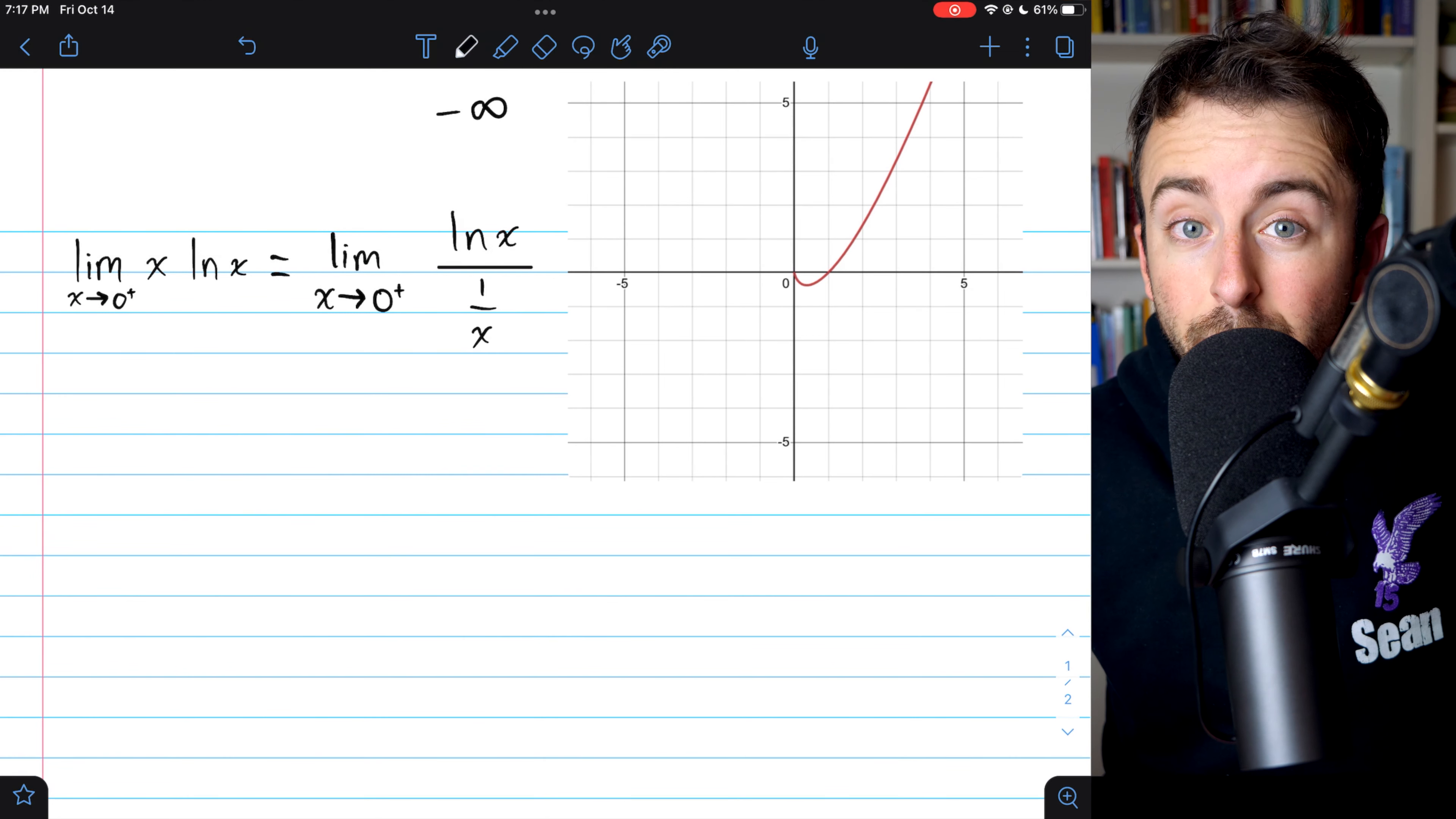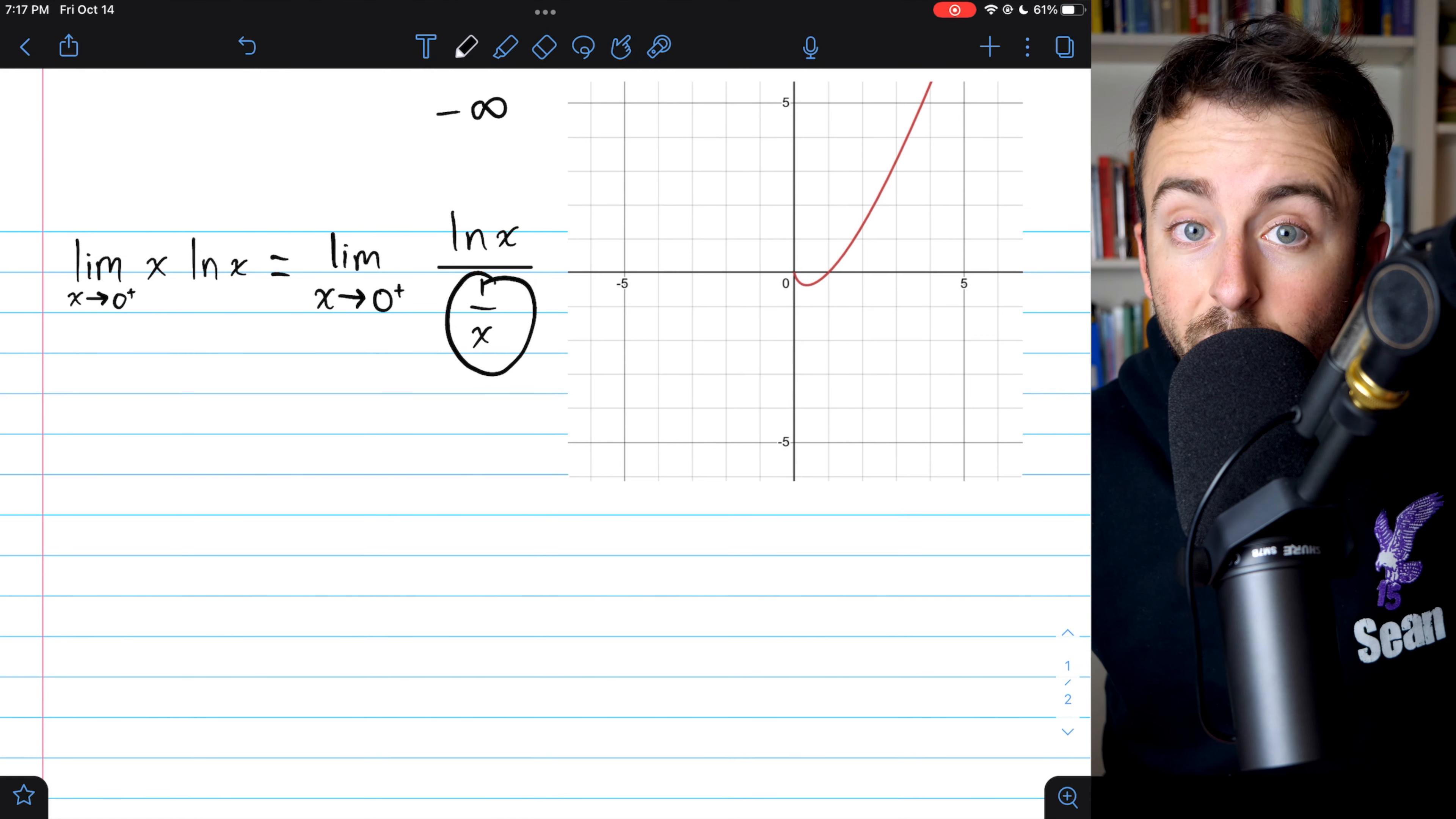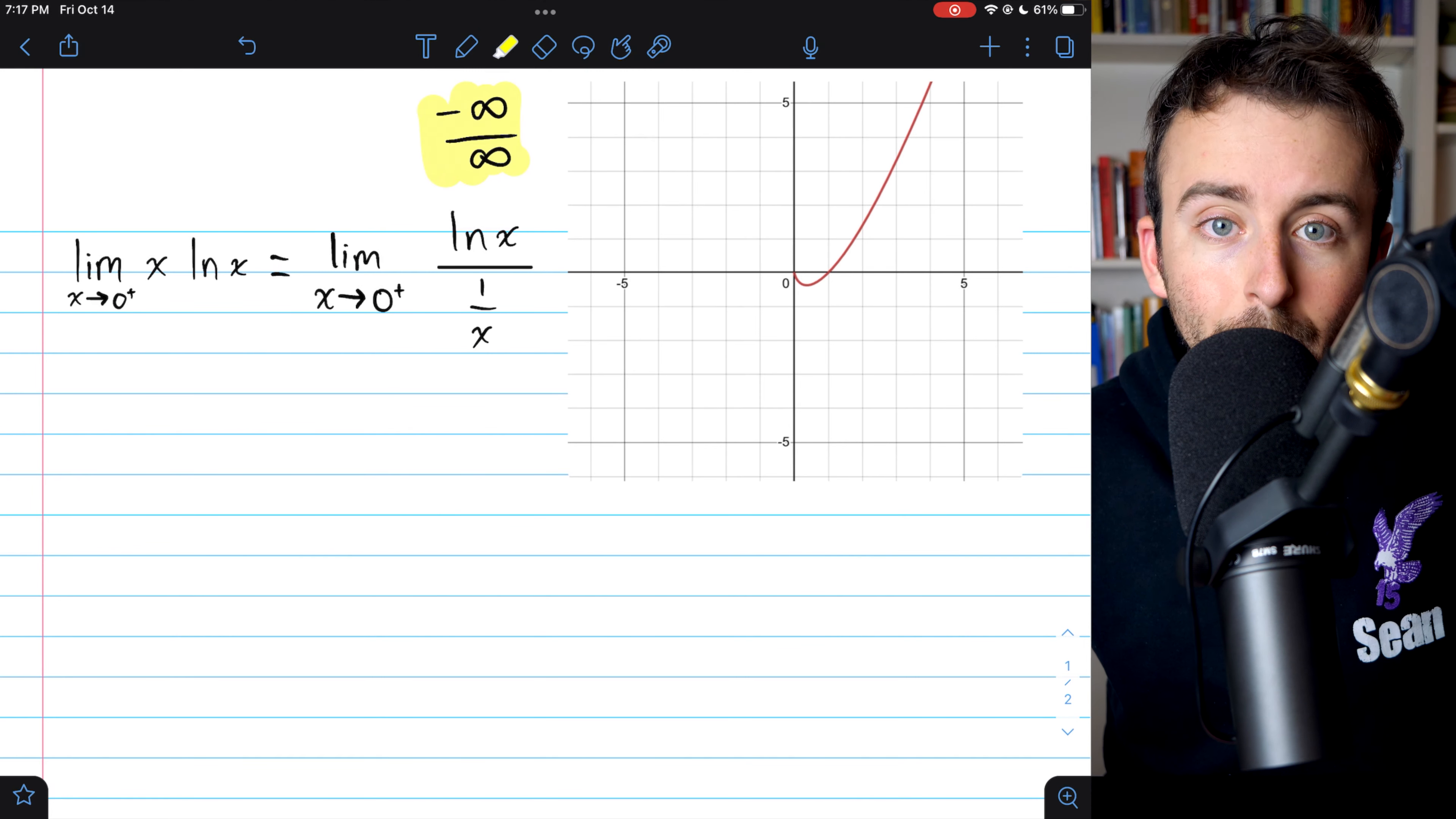The natural log of a really small positive number is a huge negative number. And if we plug zero into one over x, that's just going to be positive infinity, because one divided by a really small positive number is positive infinity. So clearly, we have an indeterminate form, negative infinity over infinity. That means L'Hopital's rule applies.